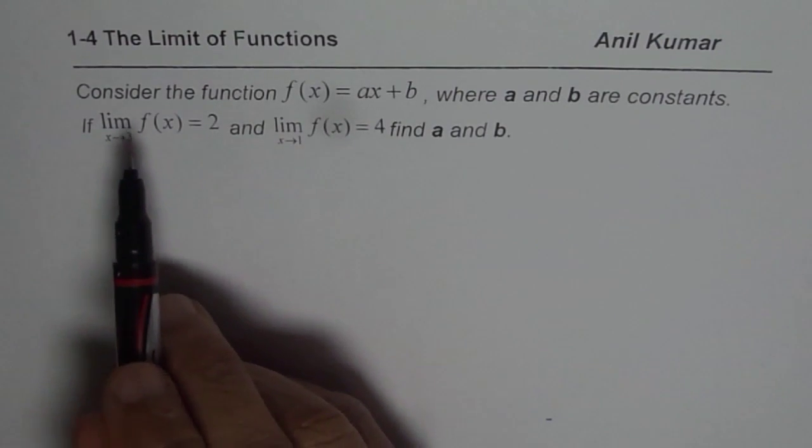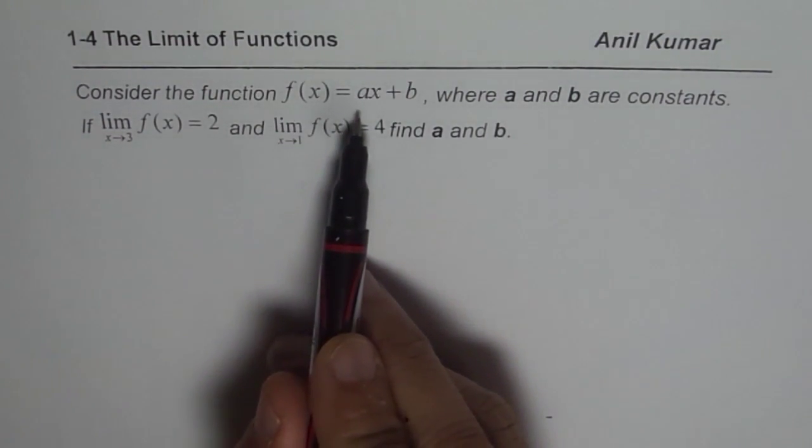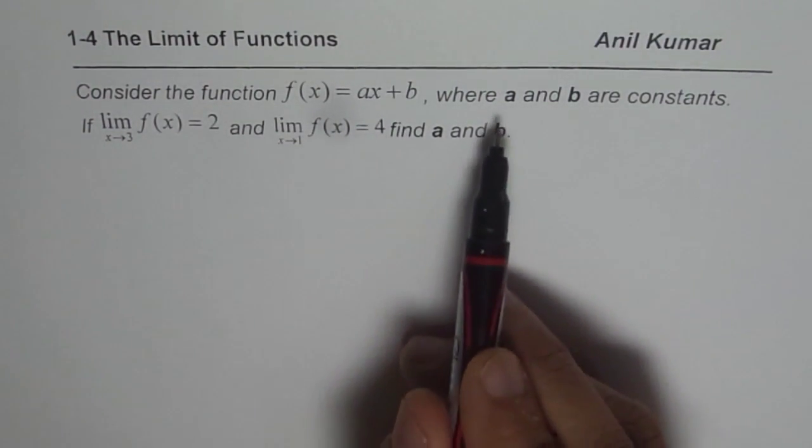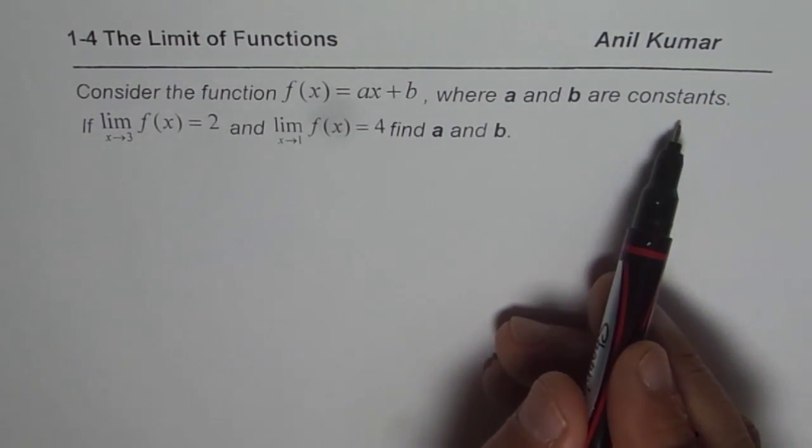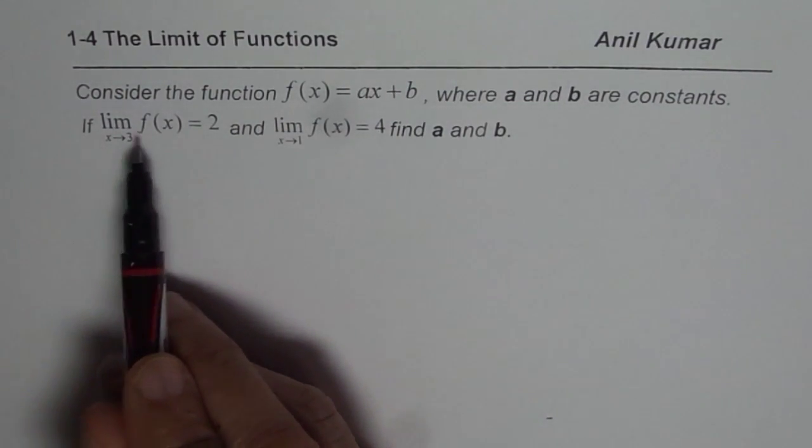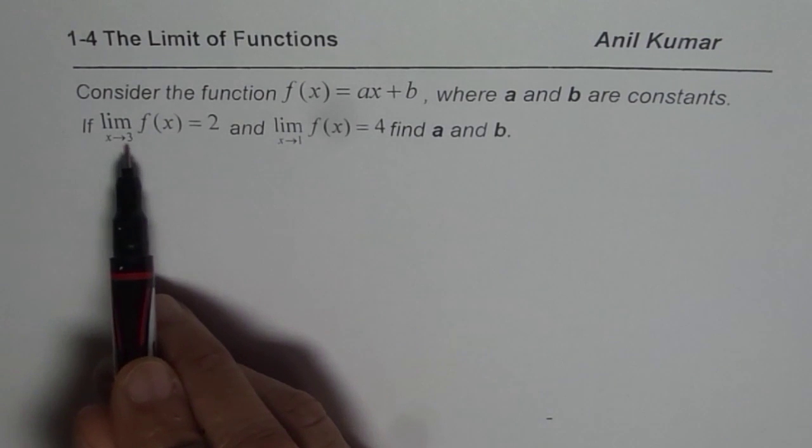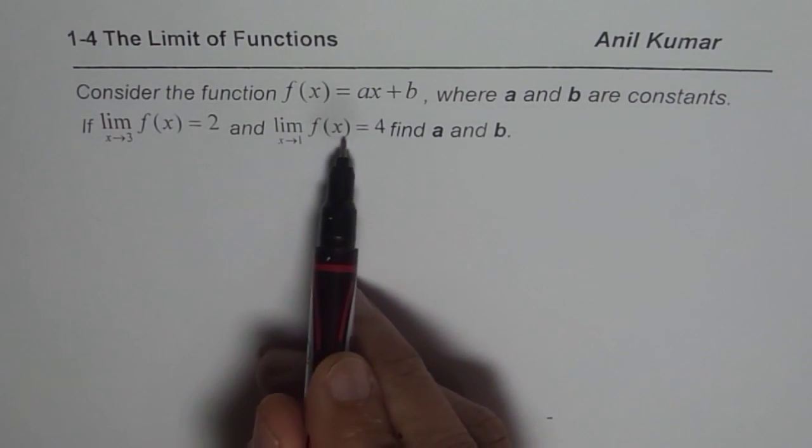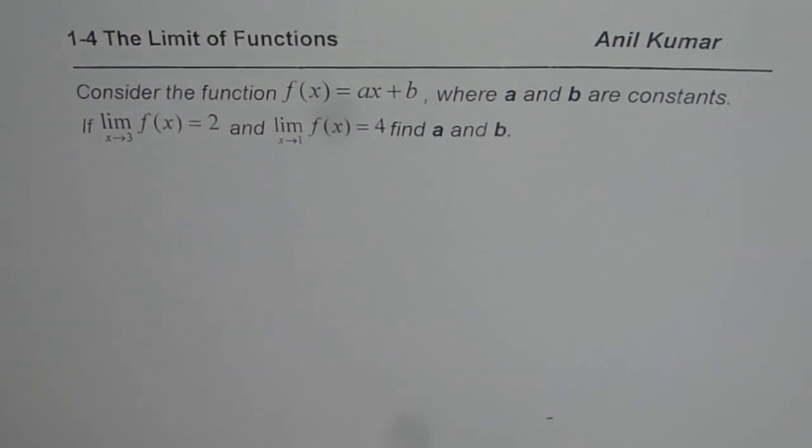Question here is, consider the function f(x) equals ax plus b where a and b are constants. If limit of function f(x) as x approaches 3 is 2 and limit of function f(x) as x approaches 1 is 4, find a and b.